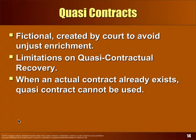Now let's talk about a situation where it's not a contract at all. A quasi-contract is a remedy you get from a court when there's no actual contract. This is not a contract formed by the parties — this is a contract the court creates afterwards to avoid unjust enrichment.